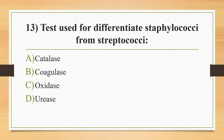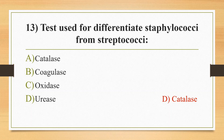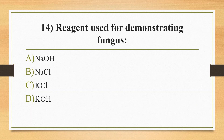Thirteenth question: test used to differentiate Staphylococcus from Streptococcus — option A catalase test, option B coagulase test, option C oxidase test, option D urease test. The answer is option A, catalase test. Coagulase test is used to differentiate Staphylococcus aureus from Staphylococcus epidermidis and Staphylococcus saprophyticus. Rapid urease test differentiates Candida albicans from Cryptococcus neoformans; Helicobacter pylori is rapid urease positive. In the oxidase test, Neisseria gonorrhoeae can be differentiated from coagulase-negative staphylococci and streptococci. Moraxella, Campylobacter, and Pasteurella species are also oxidase positive.